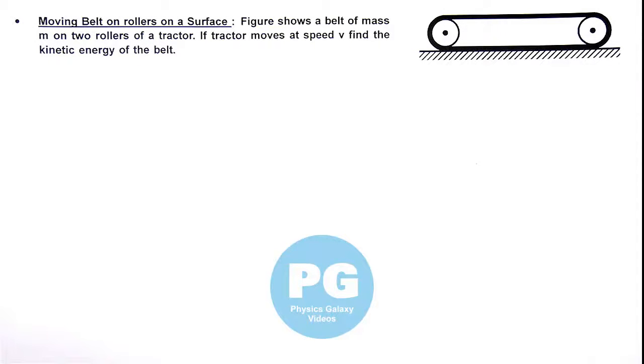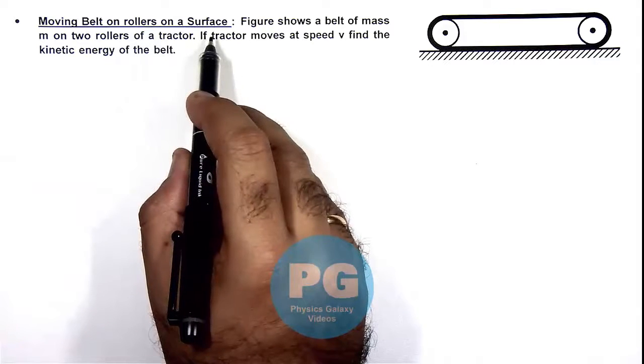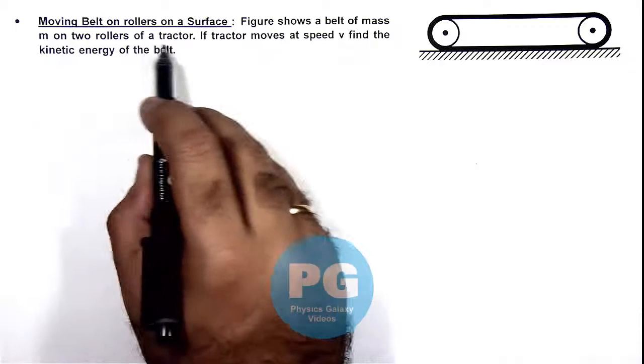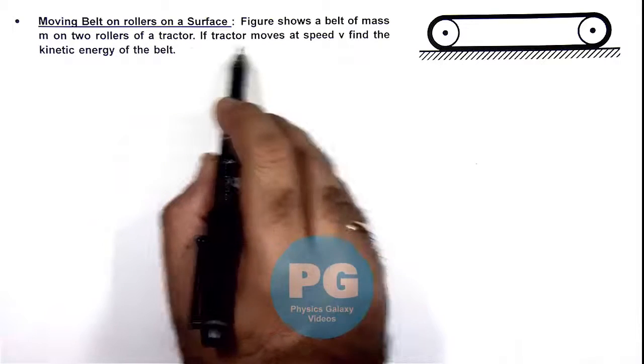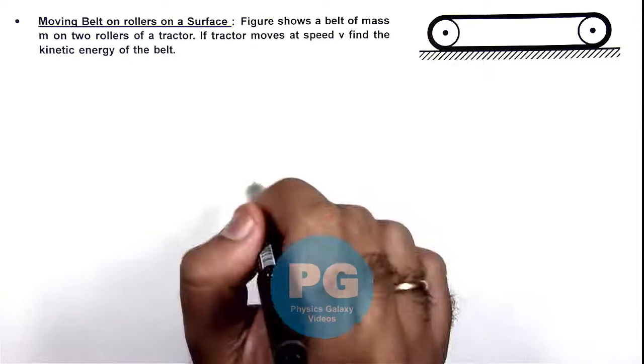In this illustration, we'll analyze a moving belt on rollers on a surface. Here the figure shows a belt of mass m on two rollers of a tractor, and if the tractor moves at speed v, we are required to find the kinetic energy of this belt.